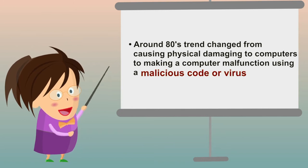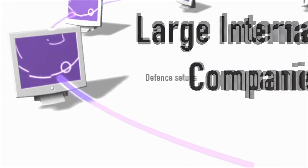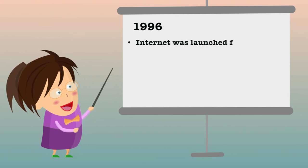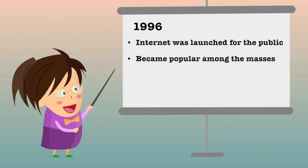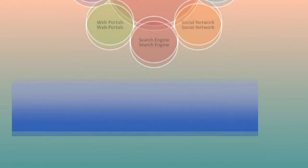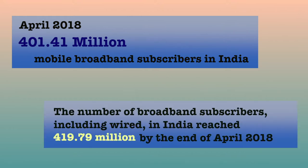Around the 1980s, the trend changed from causing physical damage to computers to making a computer malfunction using a malicious code called virus. Till then, the effect was not so widespread because the internet was only confined to different setups, large international companies, and research communities. In 1996, when internet was launched for the public, it immediately became popular among the masses and they slowly became dependent on it to an extent that it changed their lifestyle. As of April 2018, the number of mobile broadband users in India reached 401.41 million, and the overall number of broadband subscribers including wired reached 419.79 million by the end of April 2018.